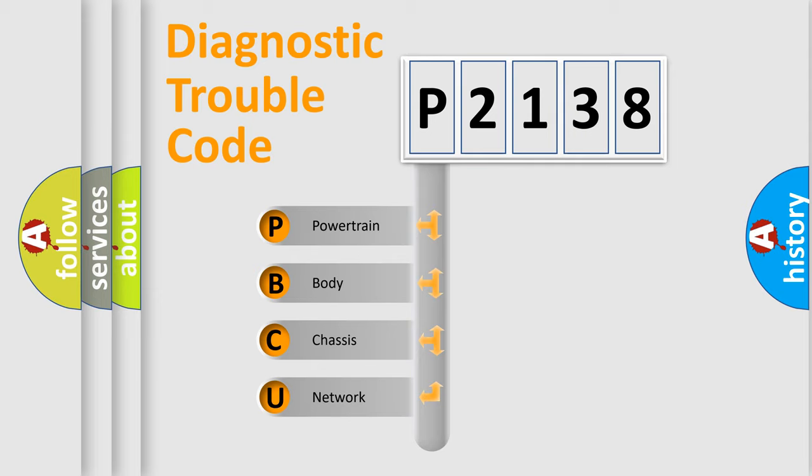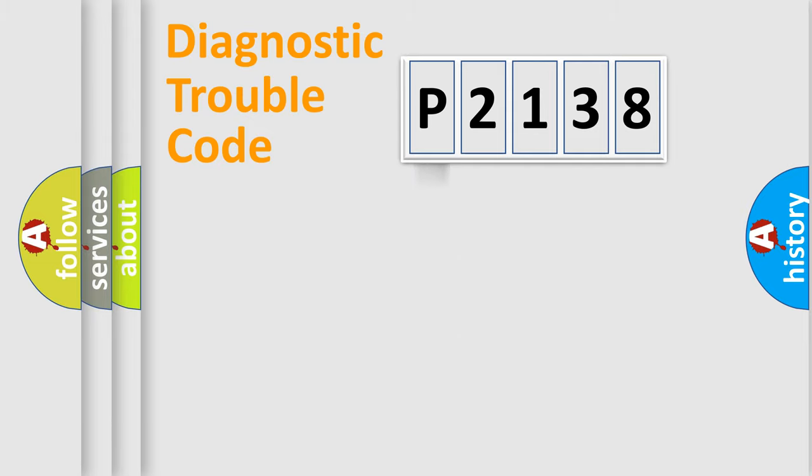We divide the electric system of automobile into four basic units: Powertrain, body, chassis, network. This distribution is defined in the first character code.